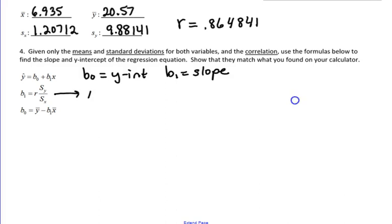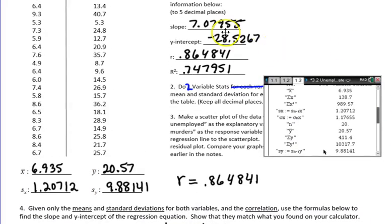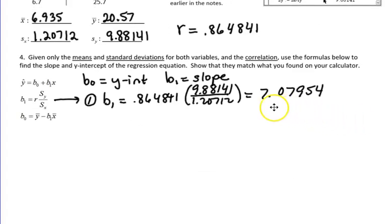In order to do that, I would start with this equation. Number one, I would start by finding the slope. Because the slope is based on the correlation, 0.864841, times the standard deviation of Y, because we're doing change in Y over change in X, over the standard deviation of X. So calculating that, I get 7.07954. That's one decimal place different than what I got when I did the regression up here. I got 955 here. I got 954. It's just because these numbers have been rounded and truncated. So no big deal. Statistics is not exact anyway.